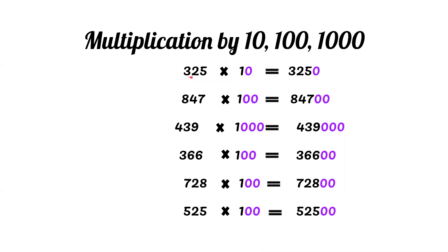325 times 10: Write 325 and then add one zero to the right of the number.